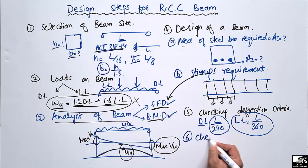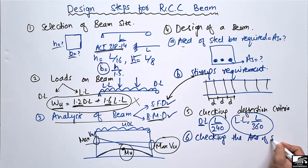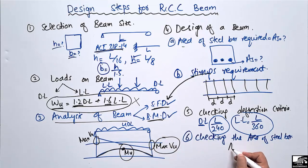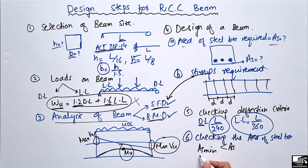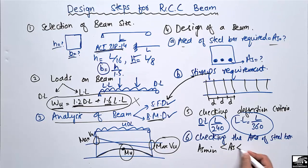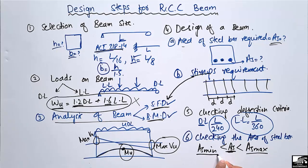The sixth step is checking the area of steel bar — verifying that the reinforcement area meets the code requirements. The required steel area (As) must be greater than As,minimum to avoid failure in the beam, and must also be less than As,maximum to avoid brittle failure. The reinforcement area must fall within this range: As,min < As < As,max.